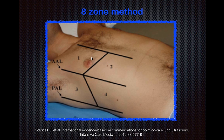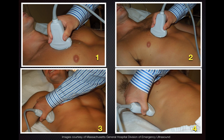By convention, there are eight zones interrogated in a supine patient. The zones are divided based on the sternal line, anterior axillary line, and posterior axillary line. Zone one is at the top of the lung anteriorly, zone two at the bottom. Between the anterior and posterior axillary lines, zone three is at the top and zone four at the bottom. In terms of transducer placement, try to maintain a perpendicular angle to the lung, as it is a curved structure.